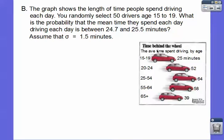The graph here shows the length of time people spend driving each day. We randomly select drivers ages 15 to 19. I think that's kind of, I don't know, 15 year old drivers, maybe not. Well, I guess you can get a permit if you're 15 and a half. But anyways, let's overlook that part.